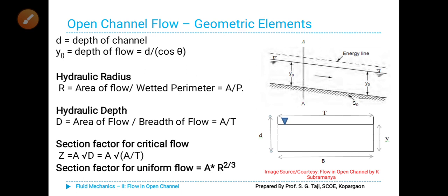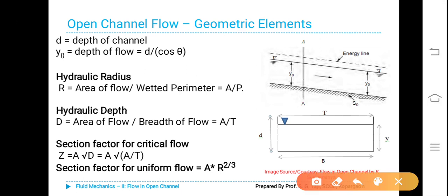As you are aware, if you consider a rectangular open channel of width B and depth Y, then top width will be equal to the bottom width of the channel B. T is equal to B, that is top width.